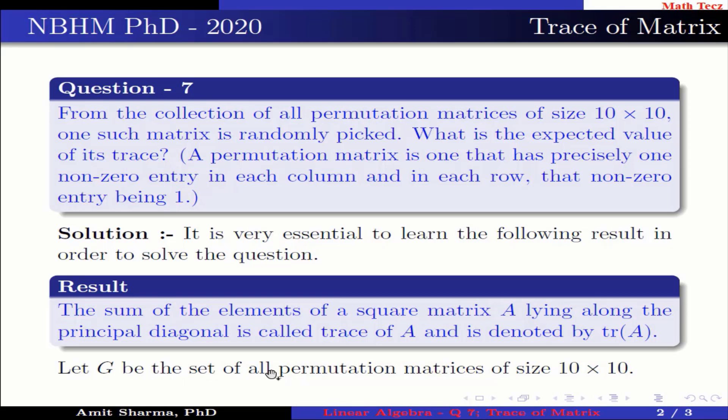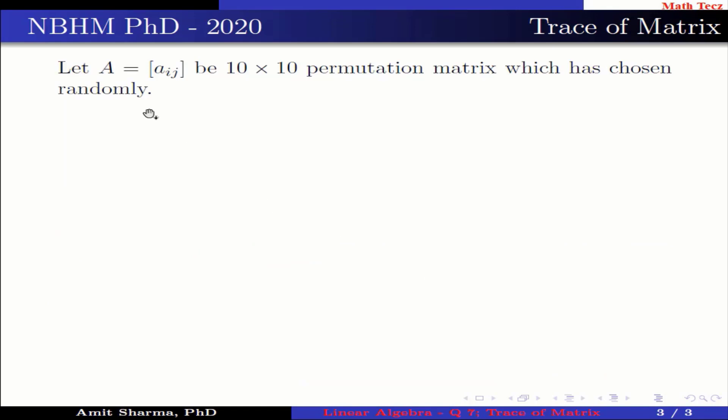Let G be the set of all permutation matrices of size 10 by 10. Let A equals [a_ij] be a 10 by 10 permutation matrix which has been chosen randomly.